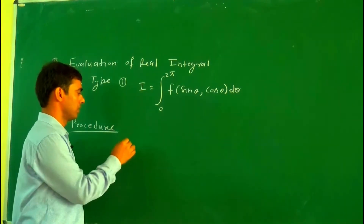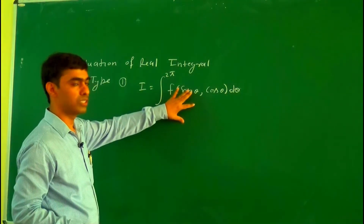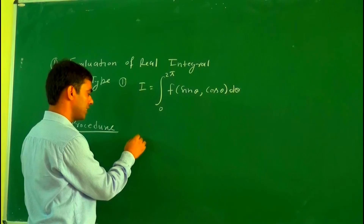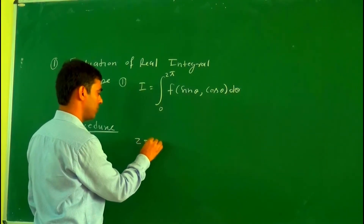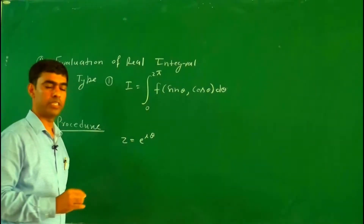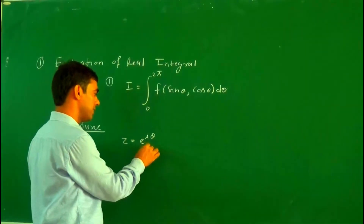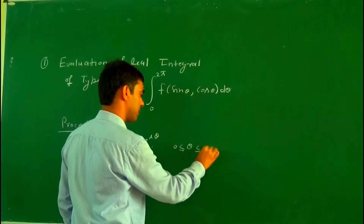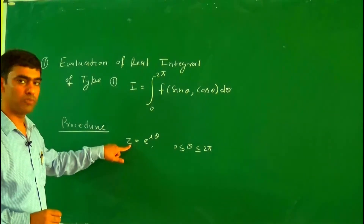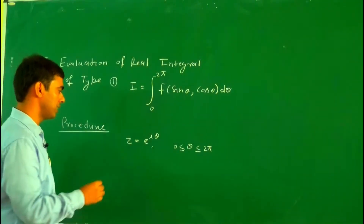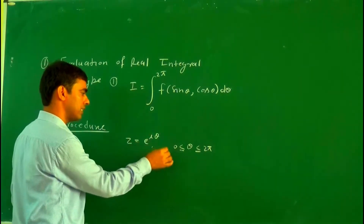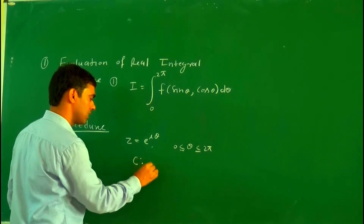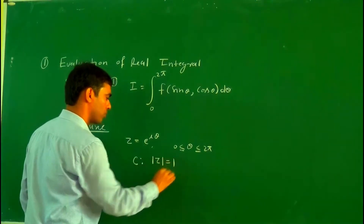First of all, we convert this real integral into a complex integral. We assume z = e^(iθ), where θ varies from 0 to 2π. Then the integration limits convert to a closed contour C such that |z| = 1.